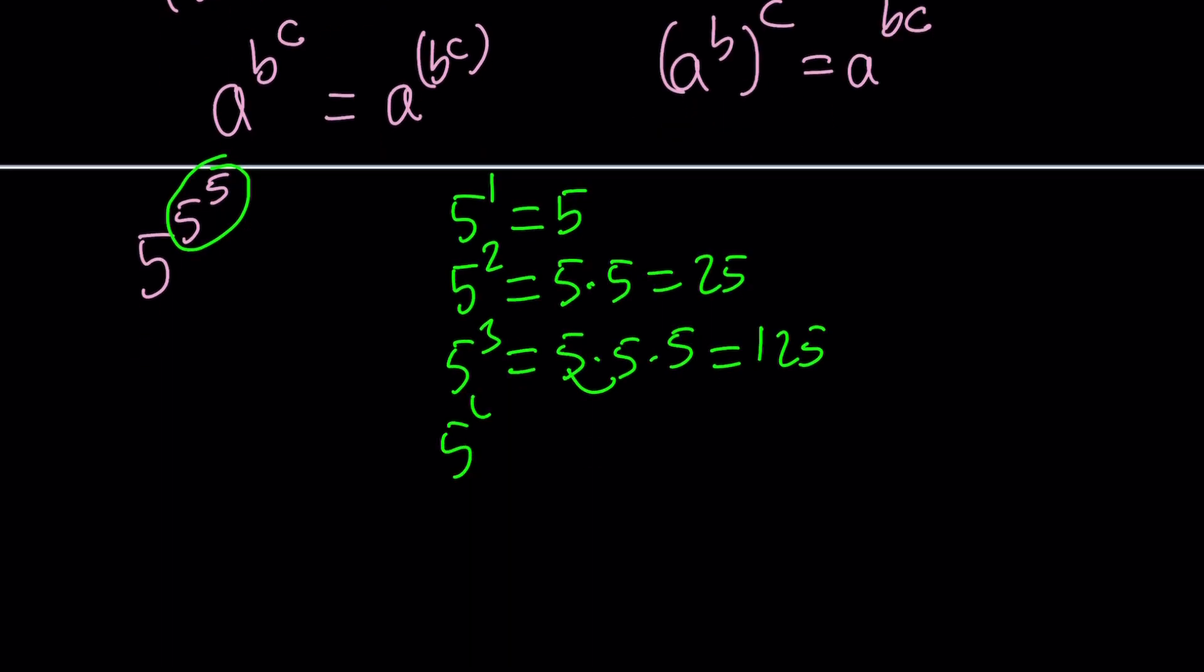And then finally, one more step. 5 to the 4th is 5, 5, 5, 5. You write the 5 four times because that's what the exponent means. There's a couple of ways to approach it. You can think of it as 125 times 5, which is 625. Or you can think of it as 25 times 25, which is 625.